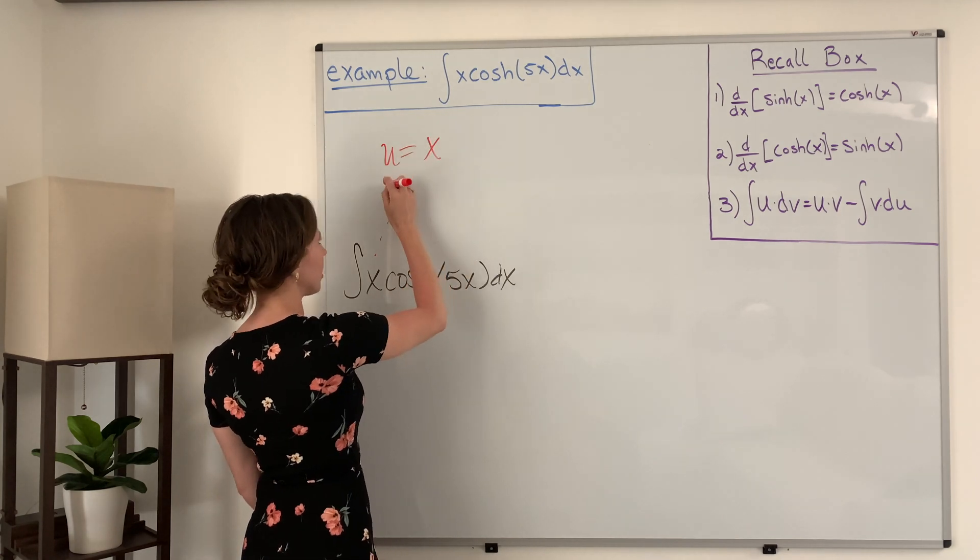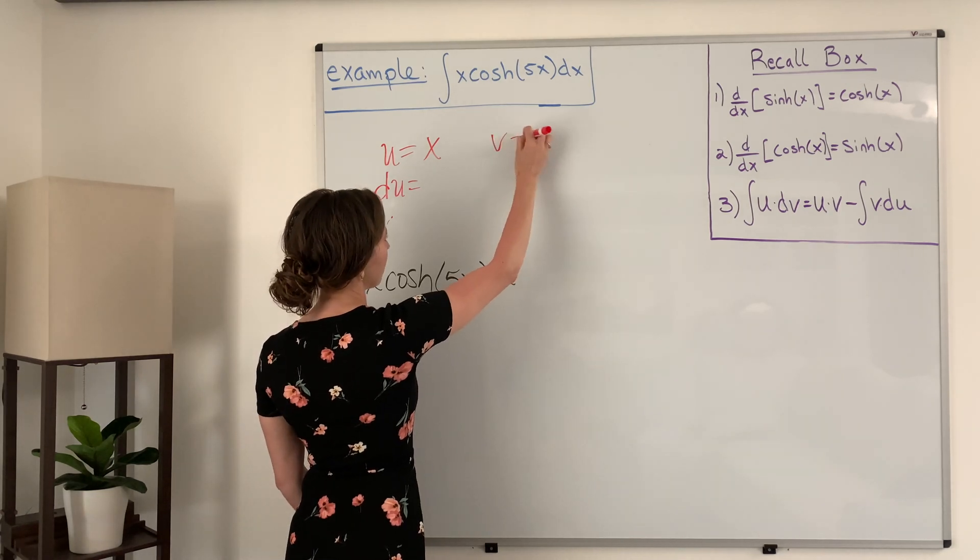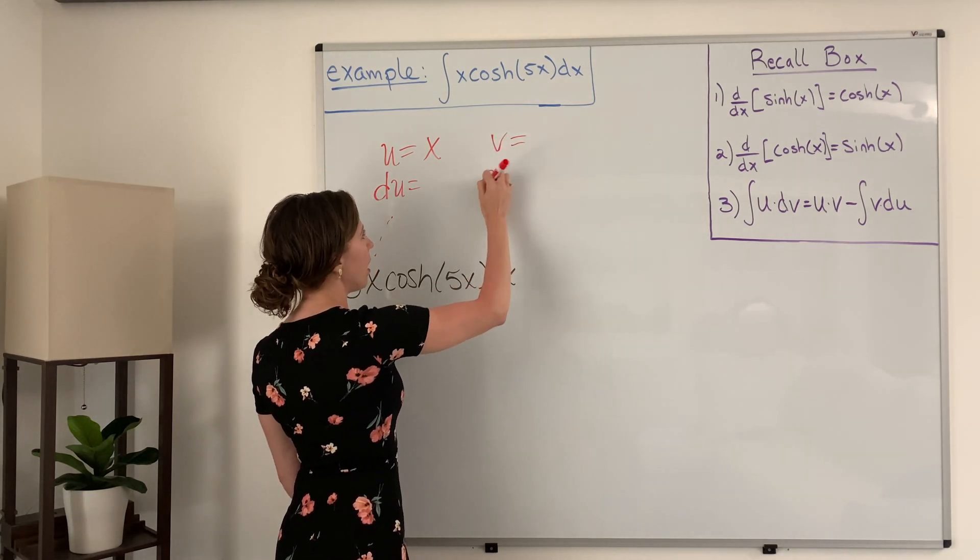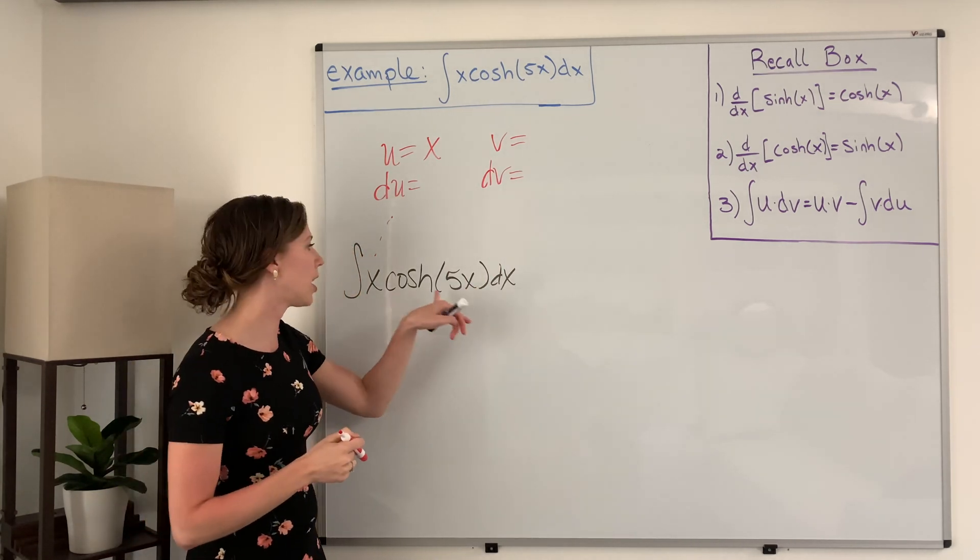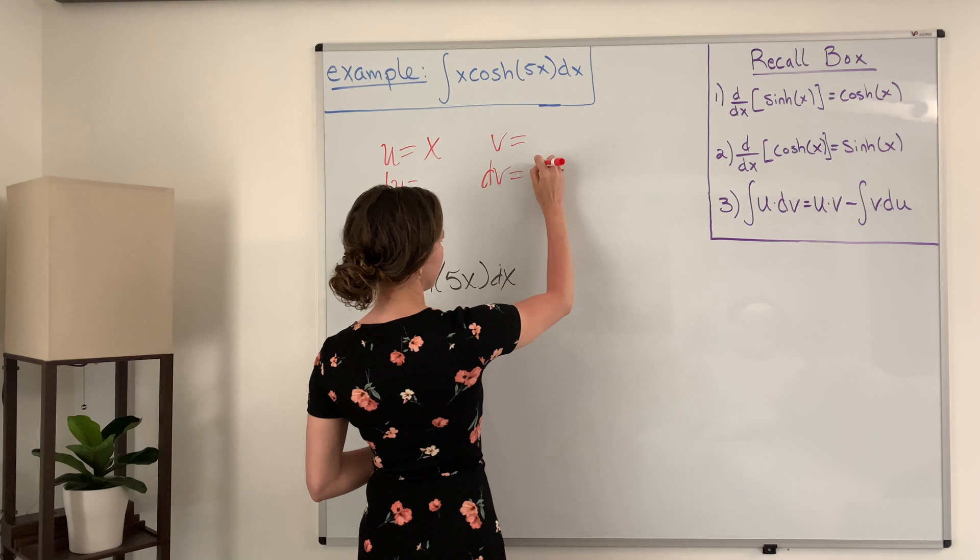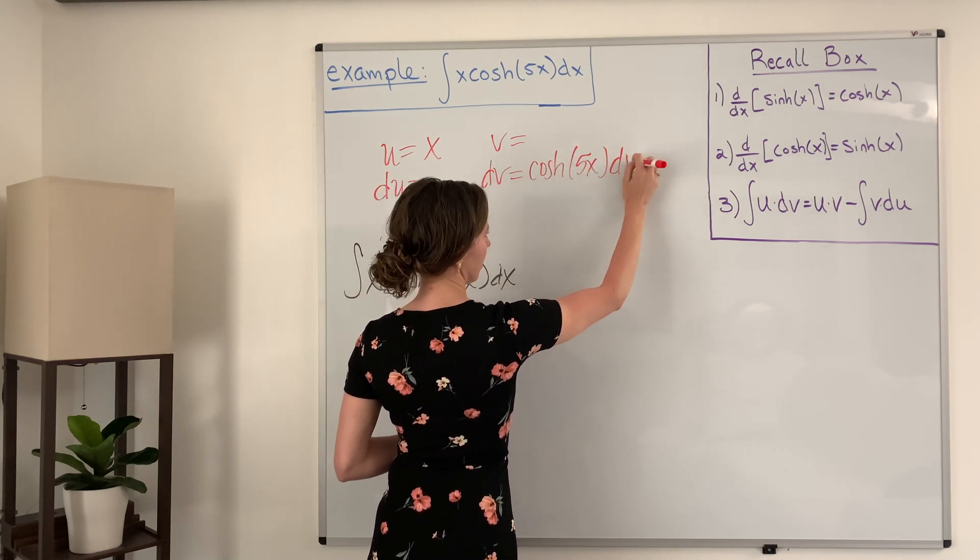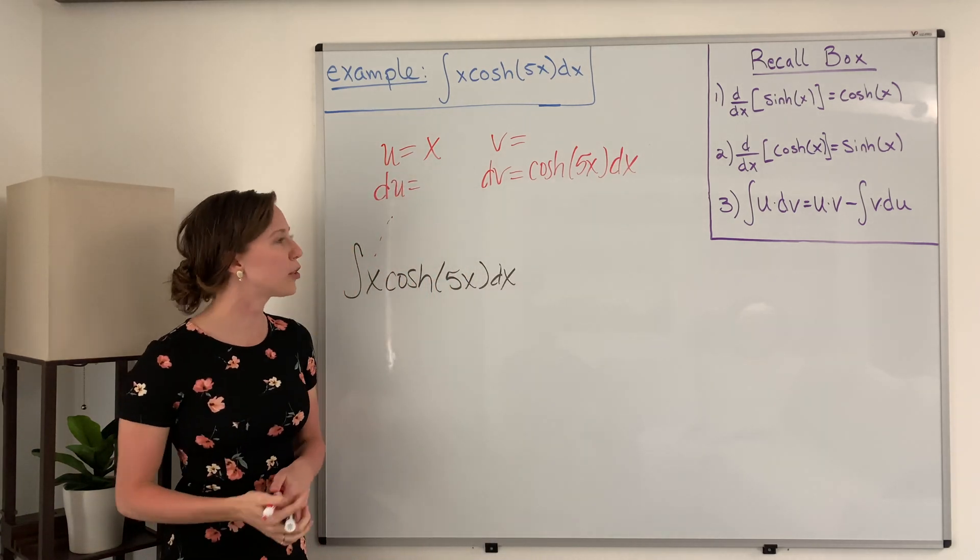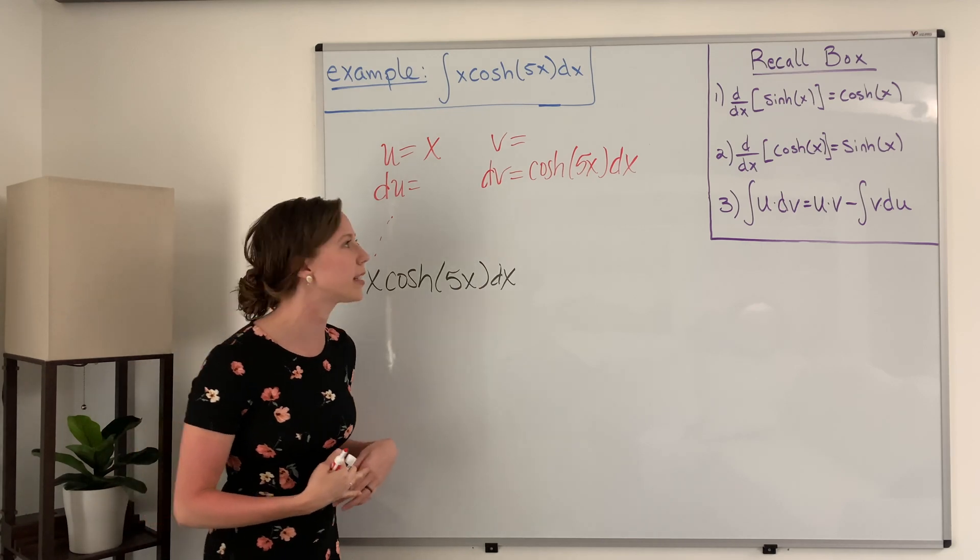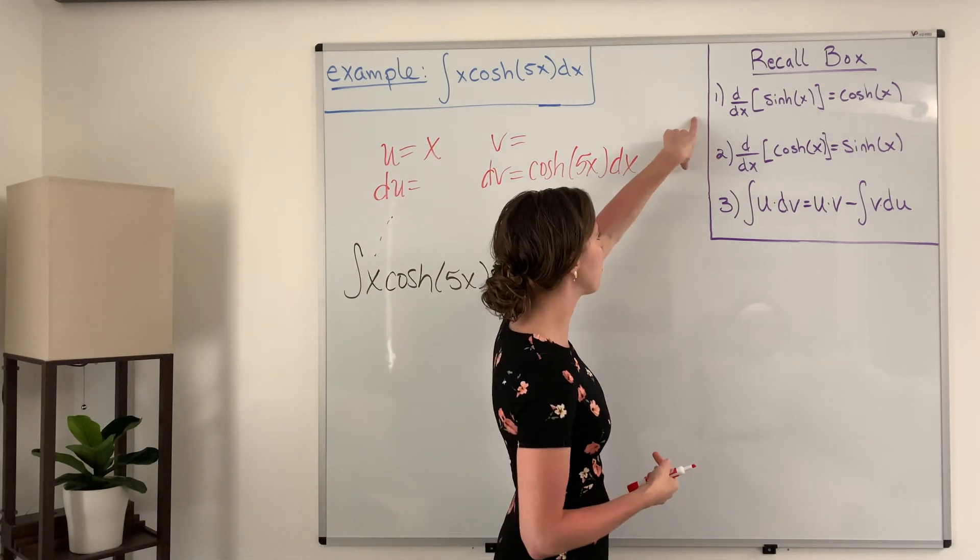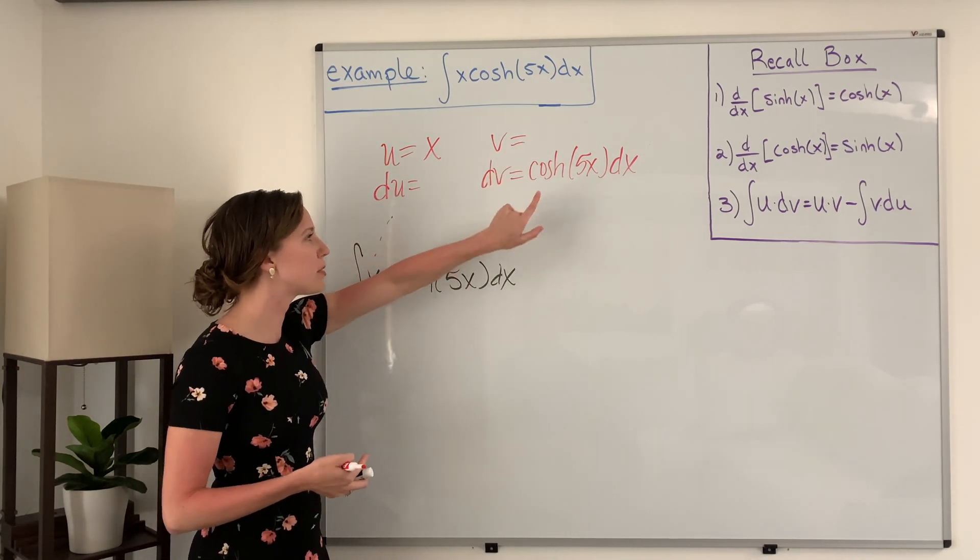And so eventually we have to find what du is. We also need to find what v is. And from this function our dv must be hyperbolic cosine of 5x dx. Now the derivatives of hyperbolic sine and hyperbolic cosine are something that we learned in calculus one, and over here for reference I have them written down.